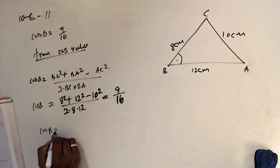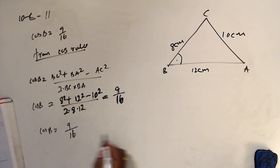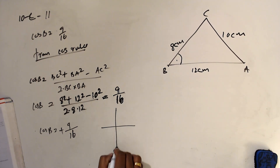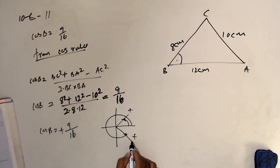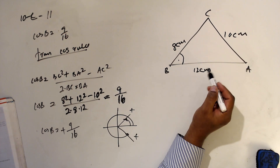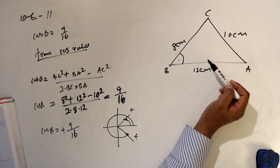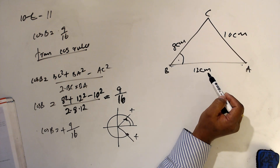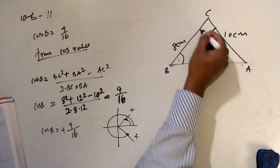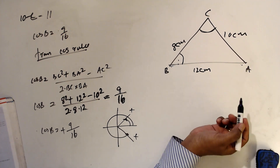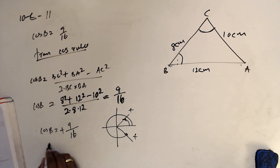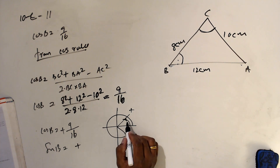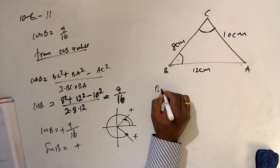This value works out to 9/16. So cos B = 9/16, which is positive. Cos is positive in the first and fourth quadrants, meaning B could be acute or reflex. Since 12 is the largest side, the angle opposite it should be the largest angle — hence B must be acute.